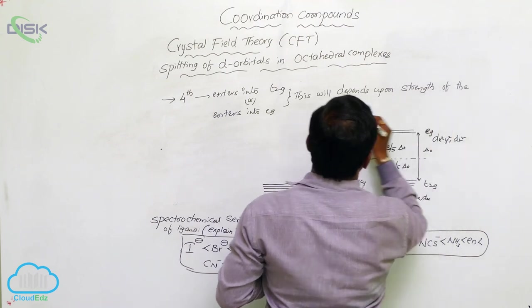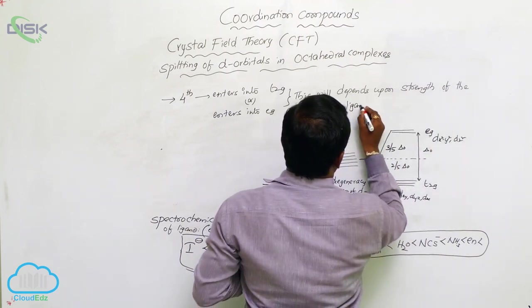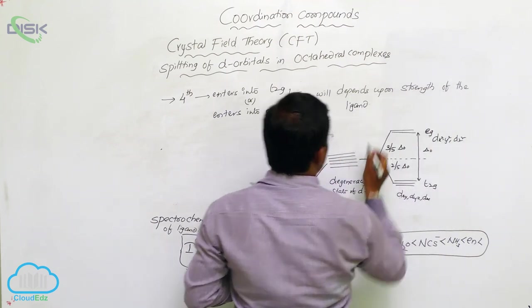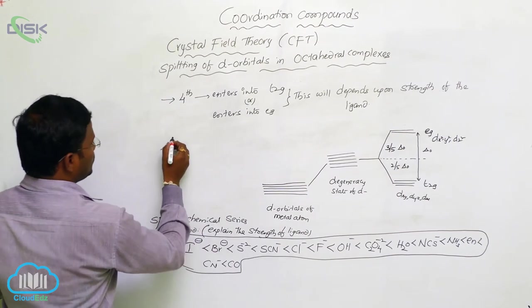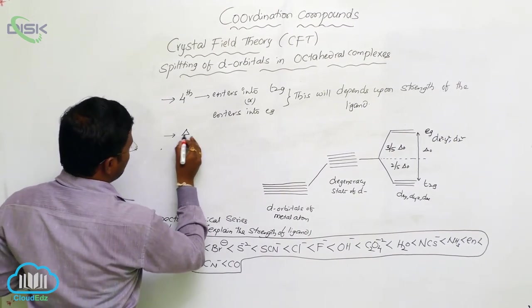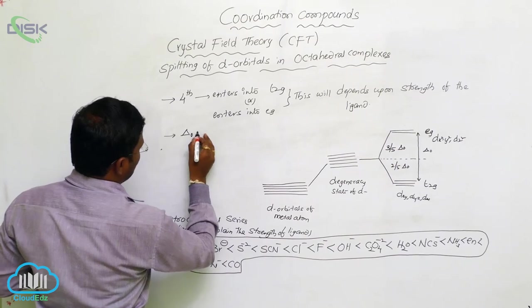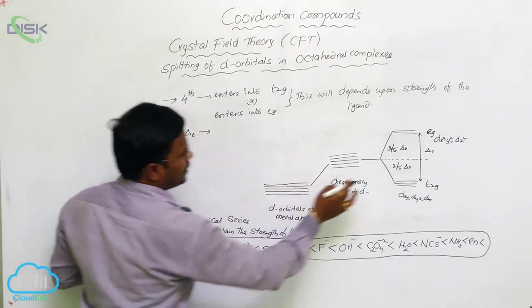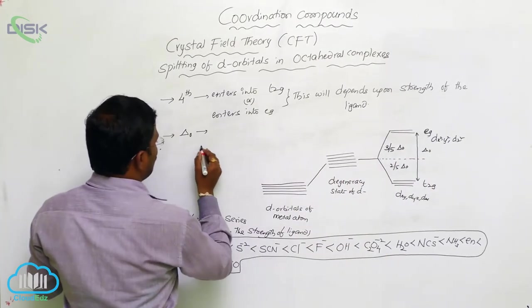So there are two conditions to consider here involving delta O. Delta O stands for the energy gap in octahedral complexes, and it plays a key role in determining where the fourth electron will be placed.